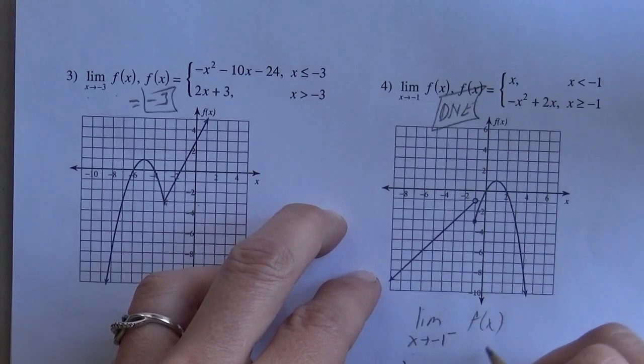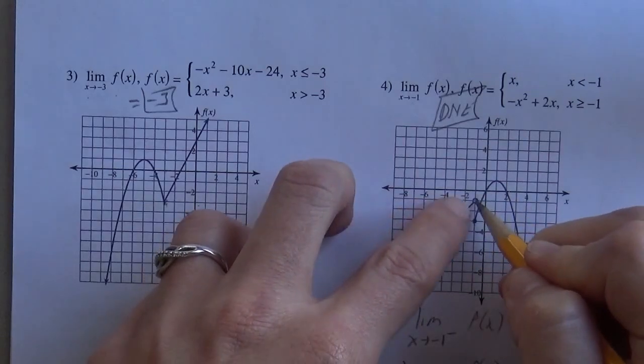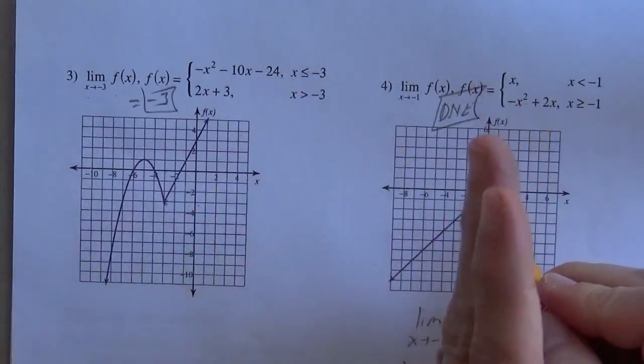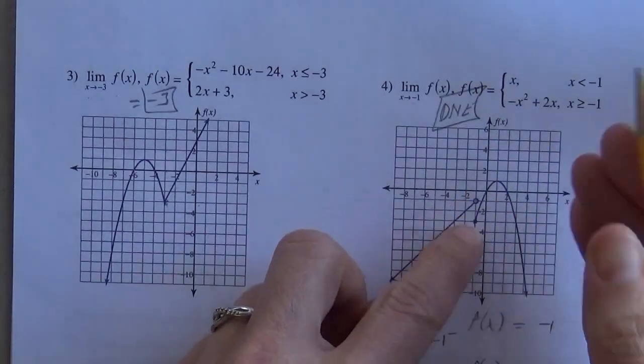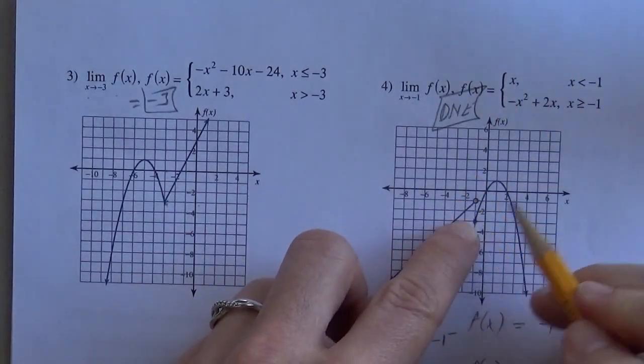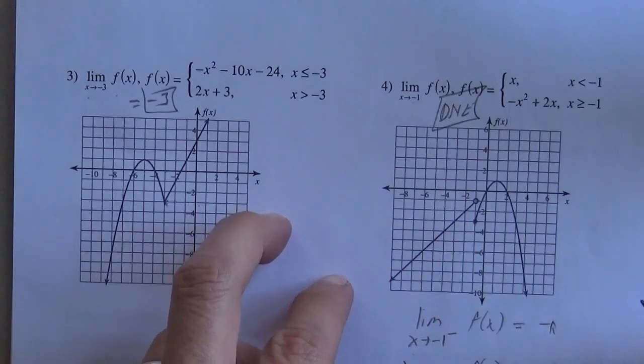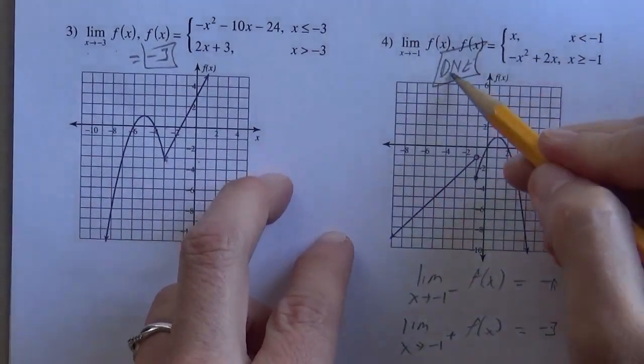And since the limit from the left would have been, the y value would have been a negative 1, and if I were coming from the right, the y value would have been this negative 3. Since those don't equal, we say it does not exist.